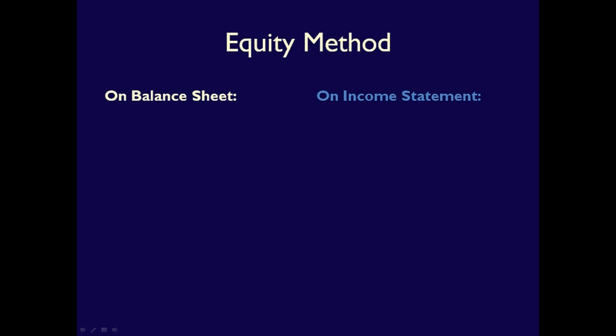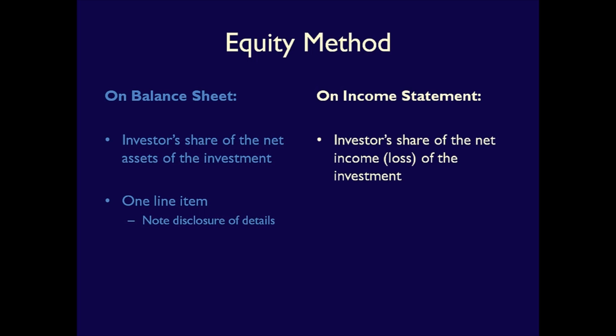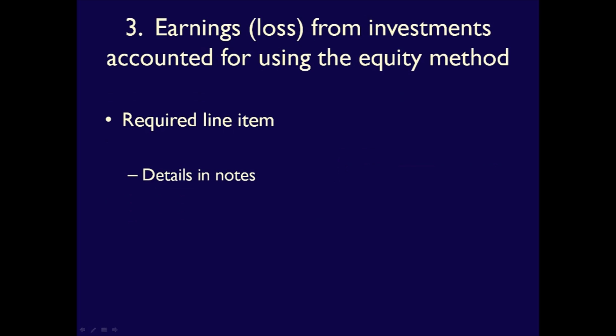If the investment is categorized as an associate, then it must use the equity method to account for the investment. On the balance sheet, the investor reports their share — say 28% — of the net assets of the investee's business as a one-line item under assets, fully described in the notes. On the income statement, the investor's share of the investee's profit or loss is reported as one line item, with full details in the notes. To summarize, profit or loss from investments accounted for under the equity method is the income or loss from a joint venture or associate reported on one line, detailed in the notes.